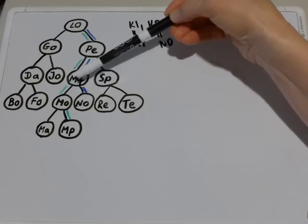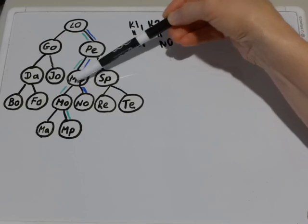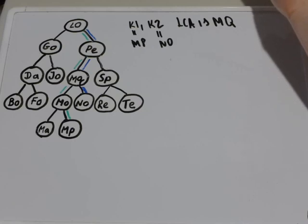and then it is the last node after which the paths from the root to both of the nodes diverged. After MQ paths diverged. So MQ is the lowest common ancestor.